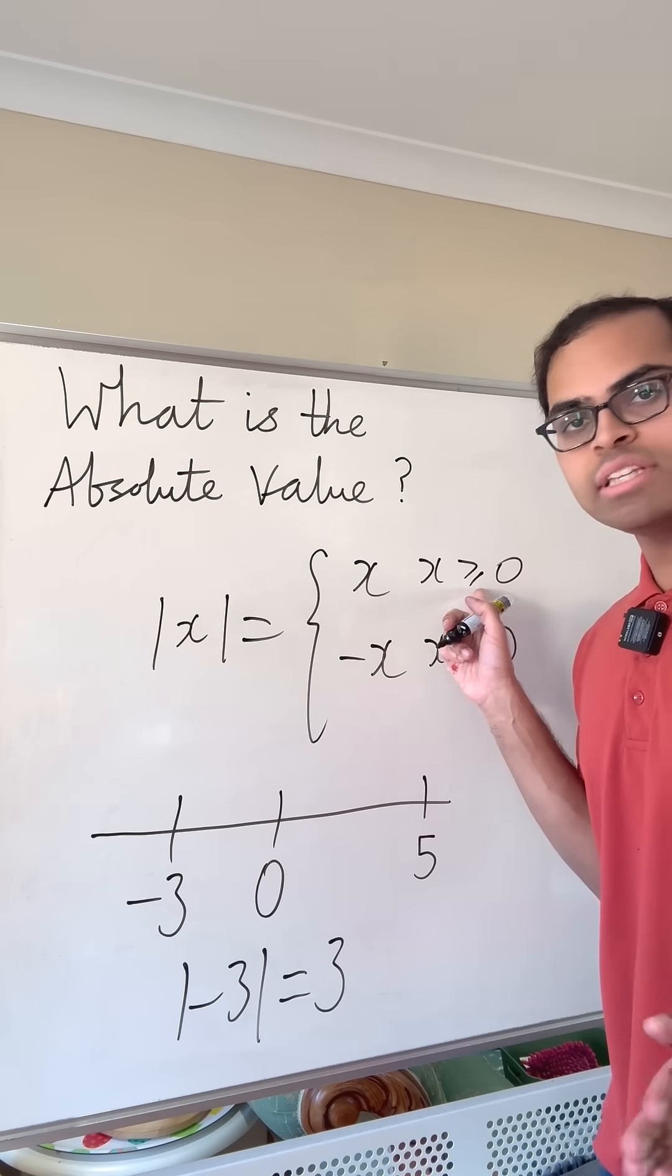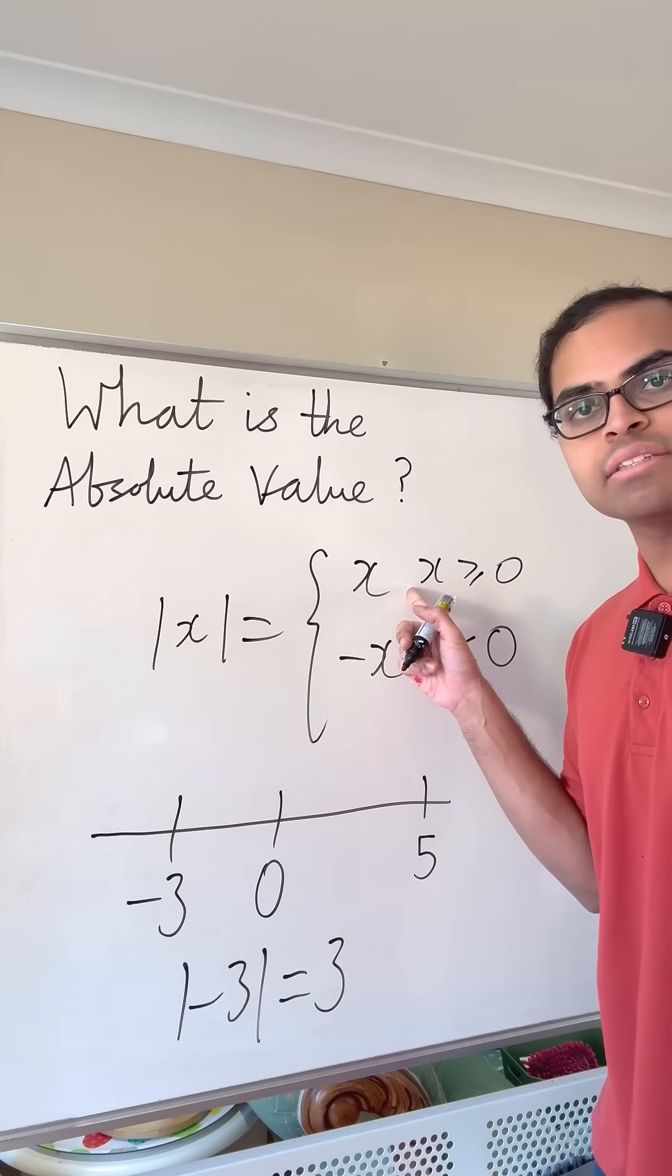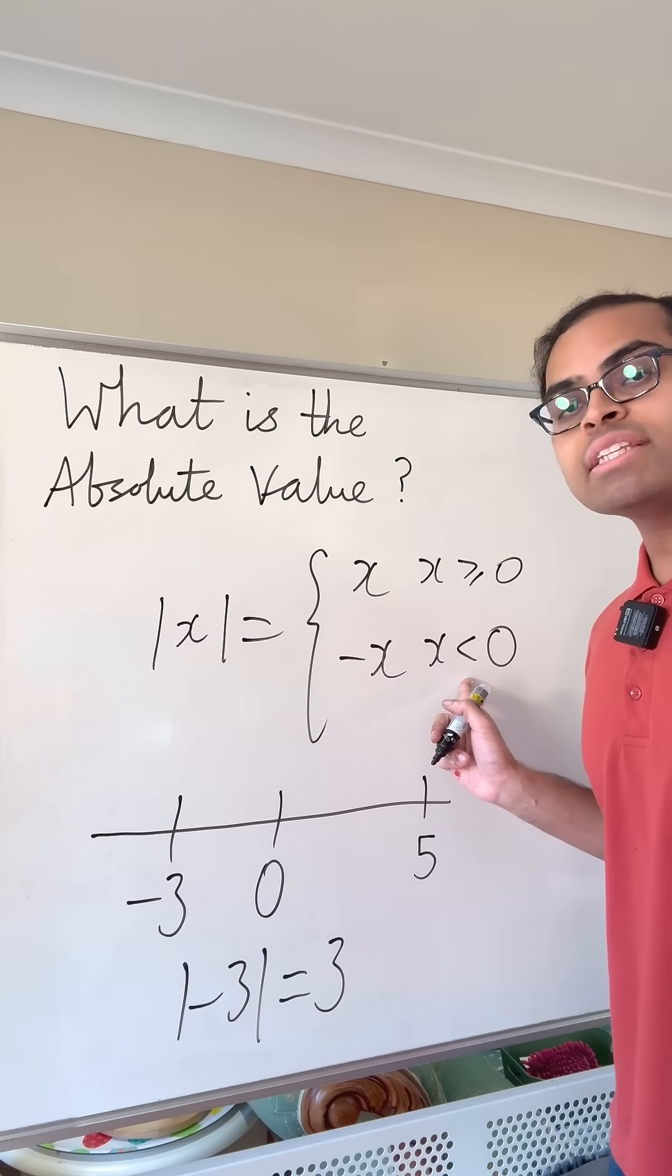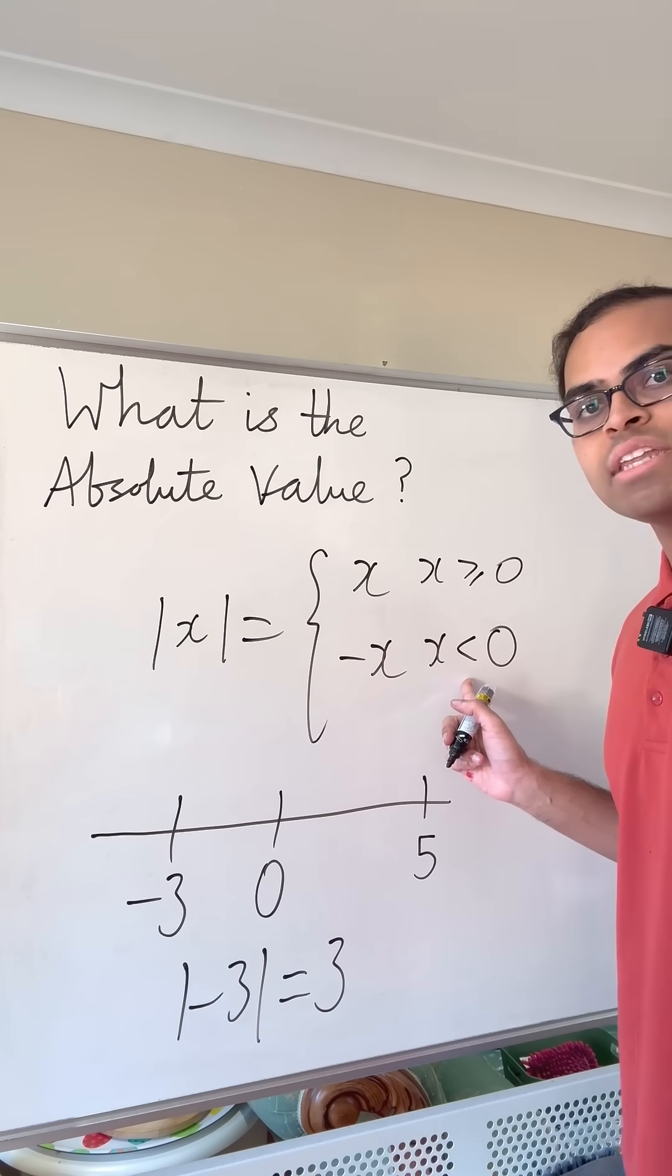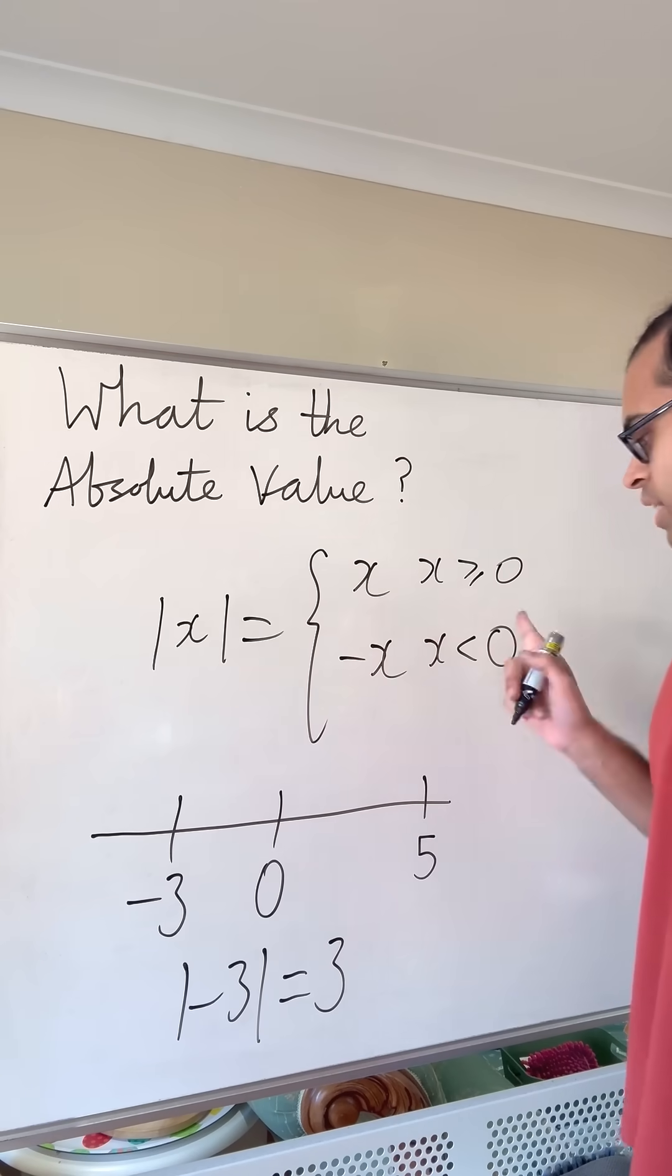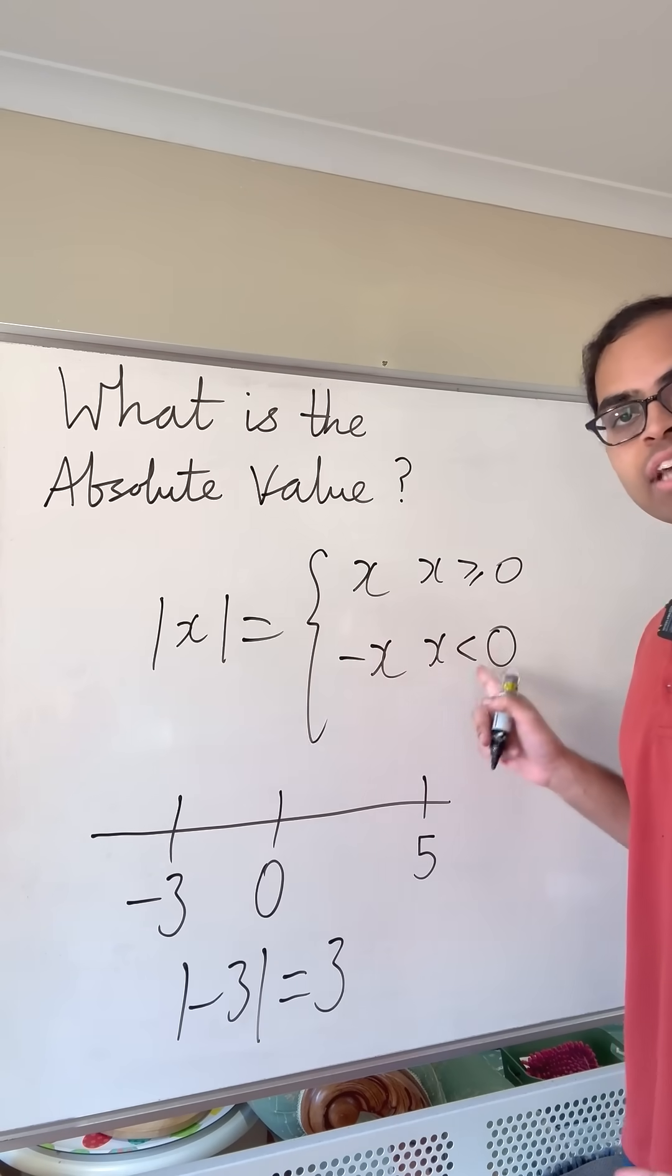When x is at least zero, the distance to zero is just whatever x is. When x is negative, like negative three, the distance is the negative of x. So negative three to zero, the distance is negative of negative three, which is positive three. That's why we have this formula negative x when x is less than zero.